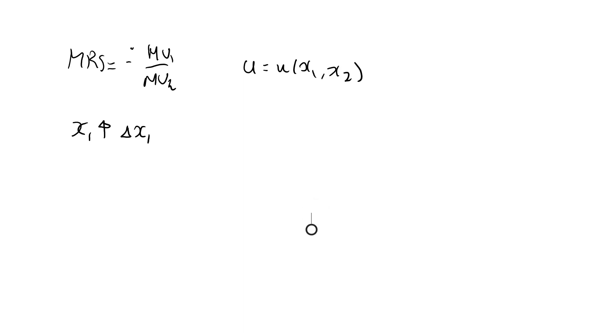Well, we know the answer. If delta x1 is small, utility will increase by delta u, which is approximately equal to the marginal utility of good one multiplied by the change in x1.